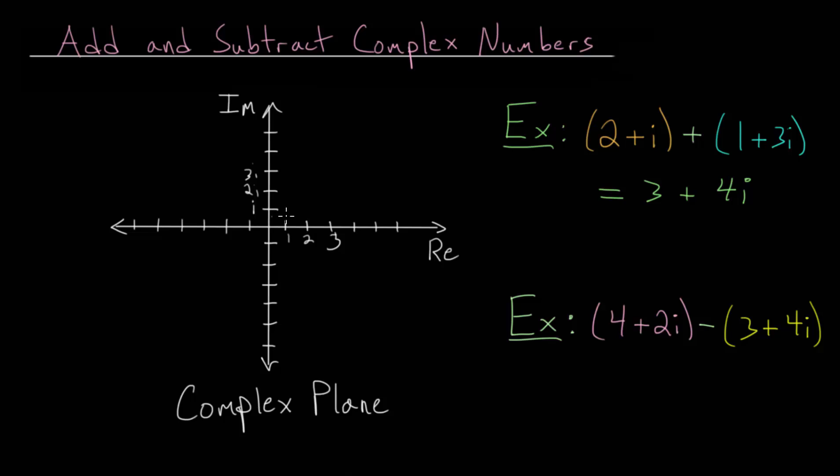So let's first just plot the two points. So 4 plus 2i, we go over 4 in our real, and up 2i in our imaginary. And again, we can draw the vector to that point, the arrow pointing toward that coordinate point to that complex number. And for the yellow one, we go over 3 for our real and up 4 or 4i in the imaginary direction. And again, let's draw that vector in.